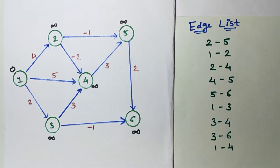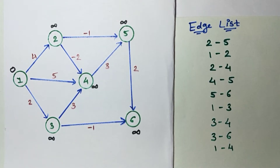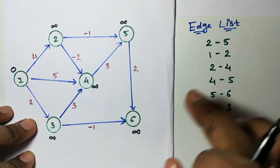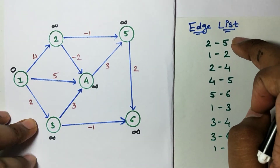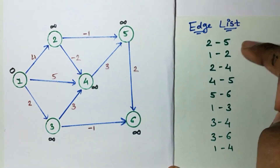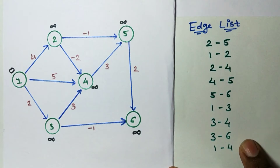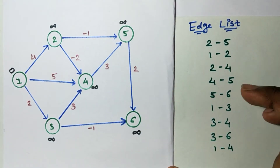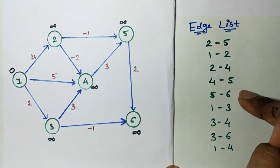Hello everyone, welcome to my channel. In this session we will discuss single source shortest path using the Bellman-Ford algorithm. From this graph I have prepared one edge list. All these edges are written in arbitrary order — you can write them in any order. Now let us start our algorithm and iterate step by step.